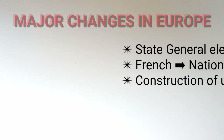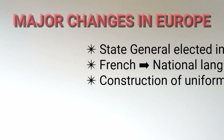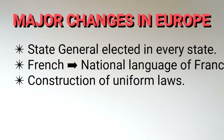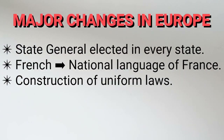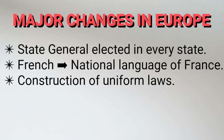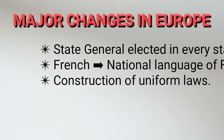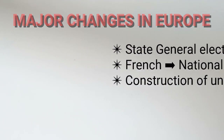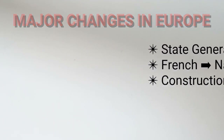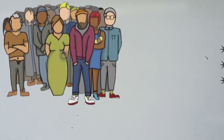The first major change is that the Estates-General was elected. The second change is that French became the national language. And the third change is the construction of uniform laws — uniform laws were made in France. With all of this spreading across Europe, there was a growing feeling of nationalism.